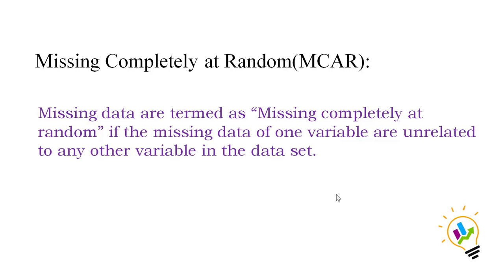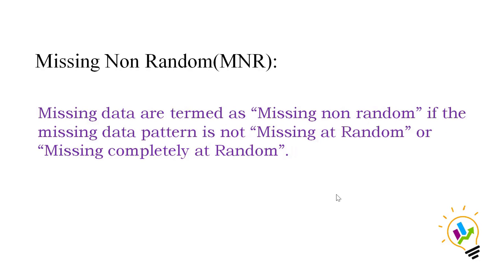The second pattern is Missing Completely at Random. Missing data is termed Missing Completely at Random if the missing data in one variable is unrelated to any other variable in the dataset — meaning the missing pattern in one variable cannot be explained in relation to any other variable in the dataset.